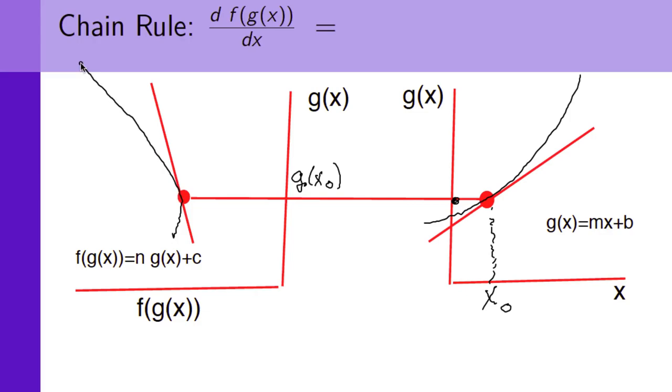And the idea is, if x naught wiggles around a bit, then g of x naught is going to wiggle around, and then f at the corresponding point will be wiggling around. So we can use this graphical representation to calculate the derivative of f of g of x with respect to x.